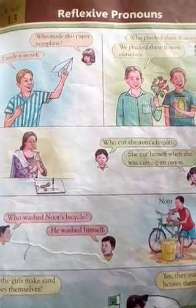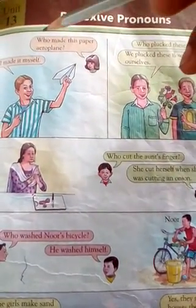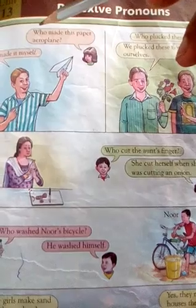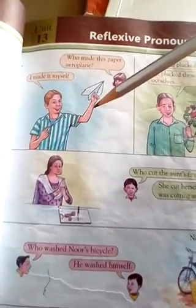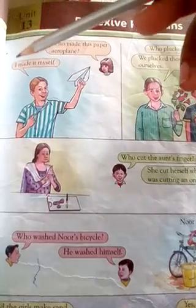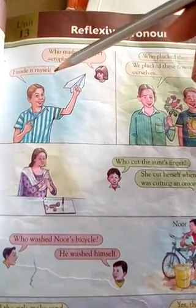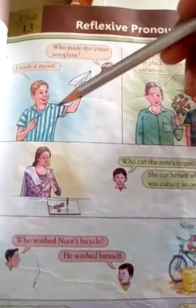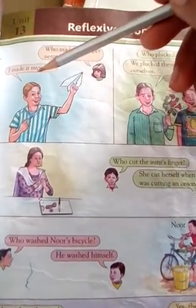First of all, I will explain to you with an example: who made this paper plane? The answer will be: I made it myself. So 'myself' is used here — I made it myself, meaning I did it on my own.